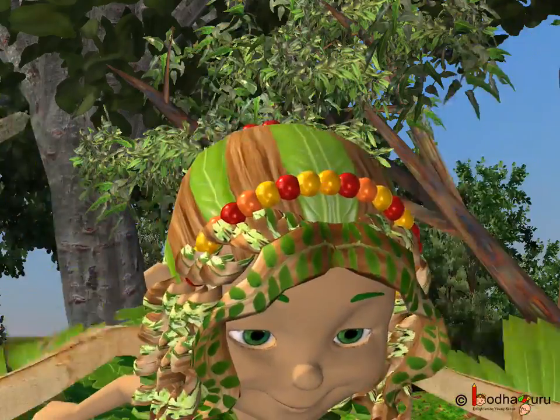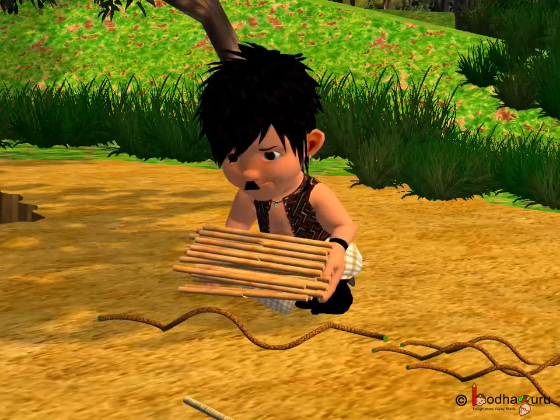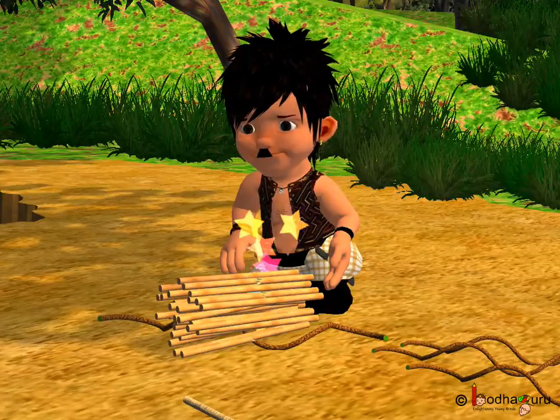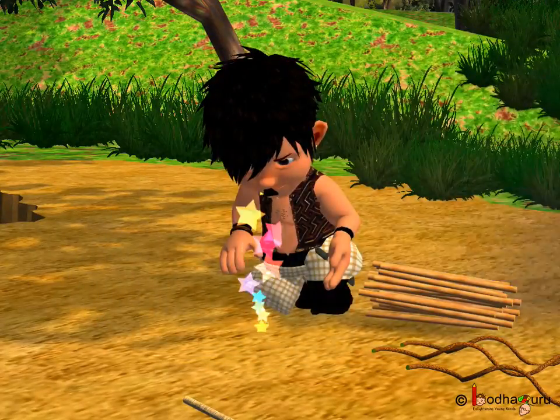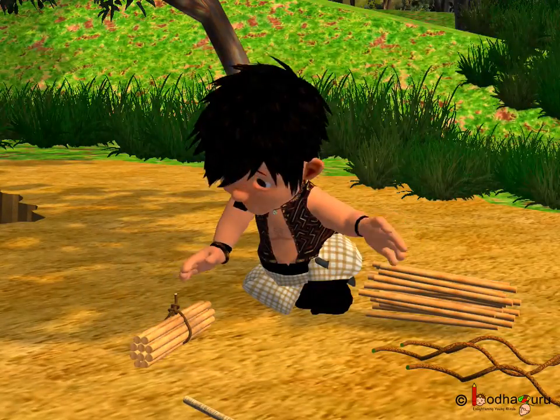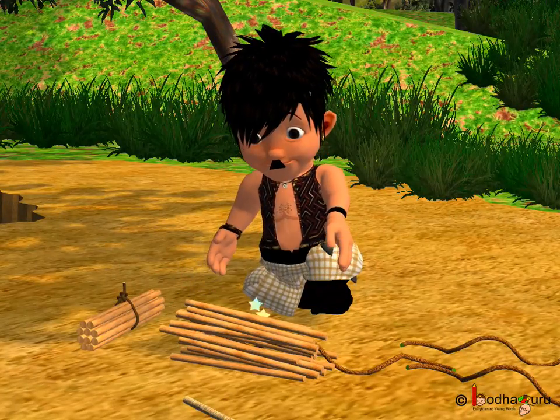Remember in the story, Bhola started making bundles of 10s using the magical rope given to him by the fairy, and it became easier to count.